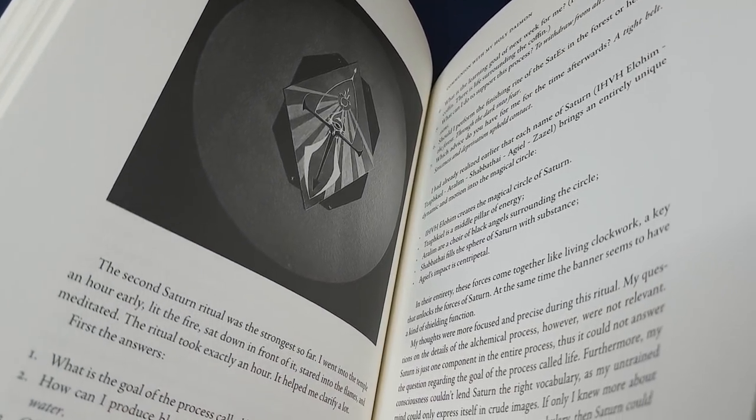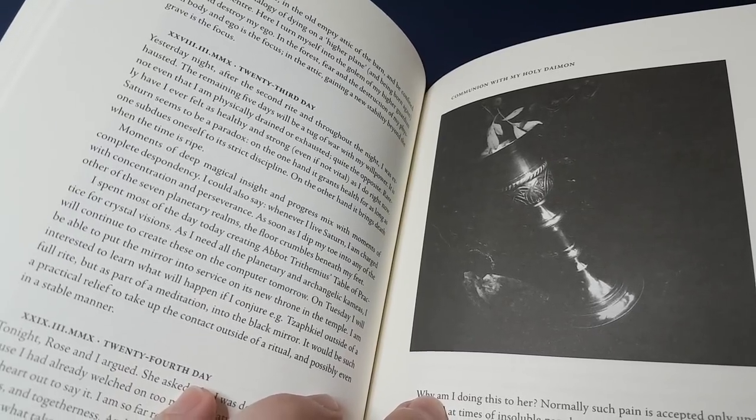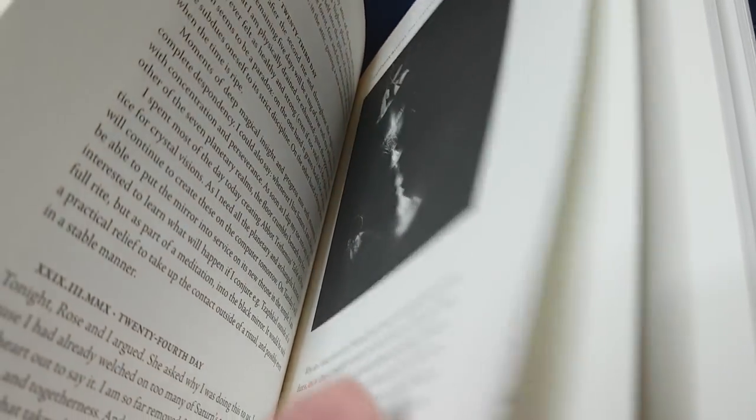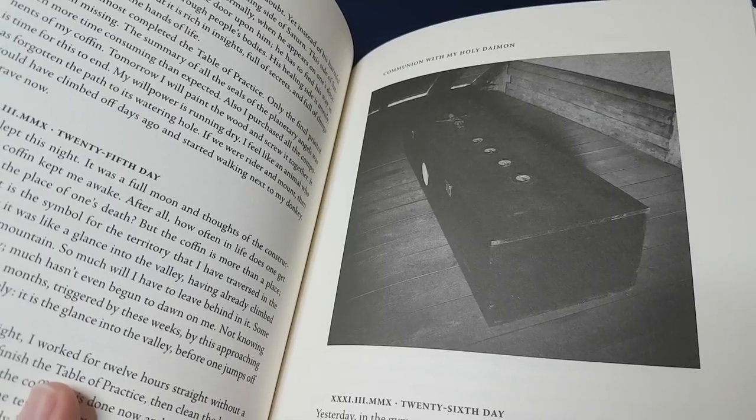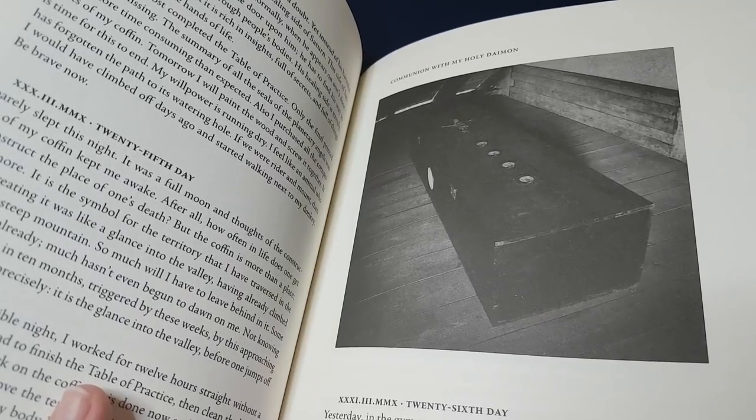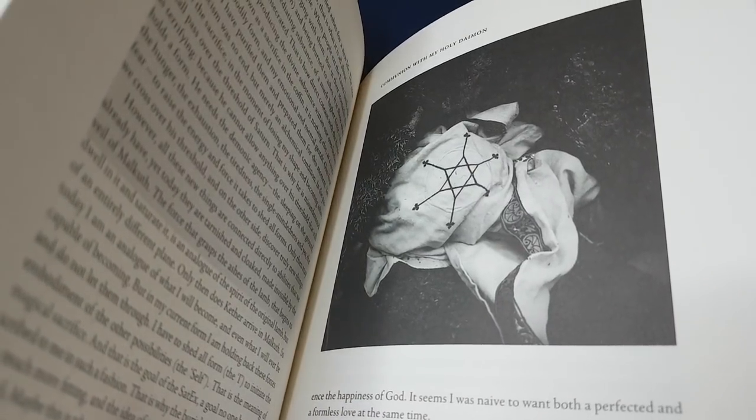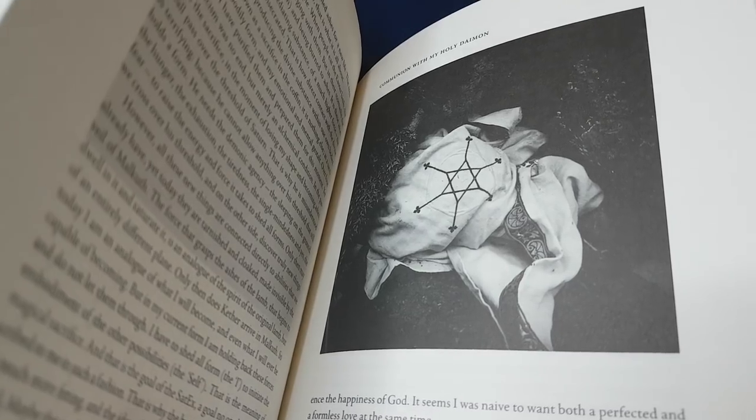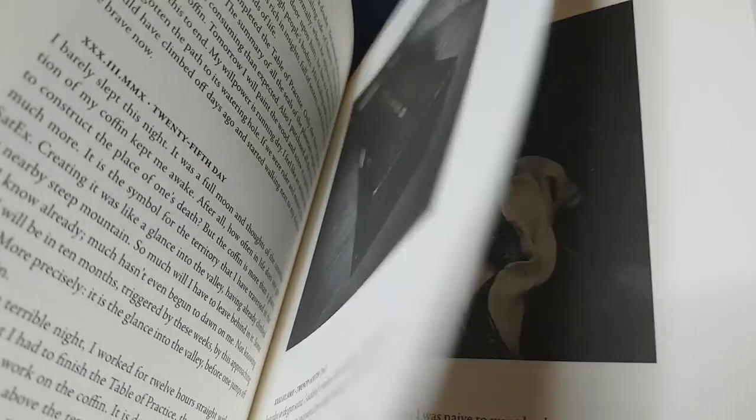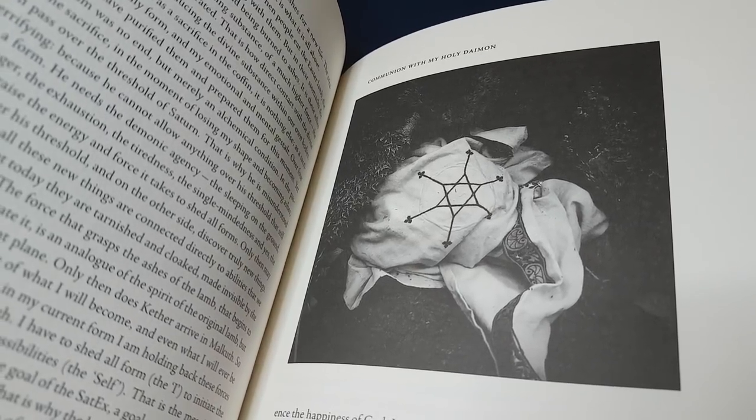And so Frater Asher describes his encounter over four weeks. The first week, he fasts. In the second week, he deprives himself of sleep, waking up every hour to perform prayers and various rituals. And then the third week, he makes a vow of silence. And then in the fourth week, he does all three of these things at the same time whilst fashioning himself this coffin in which he intends to lay himself down and essentially have a death experience.